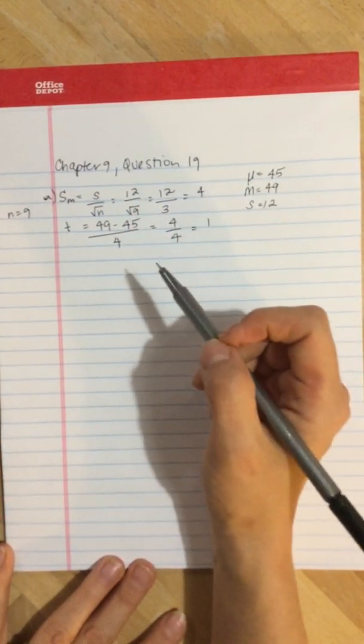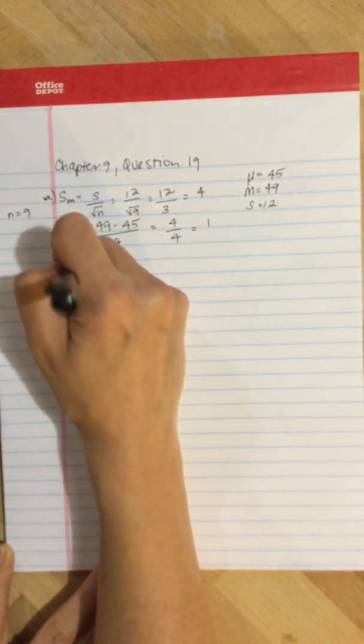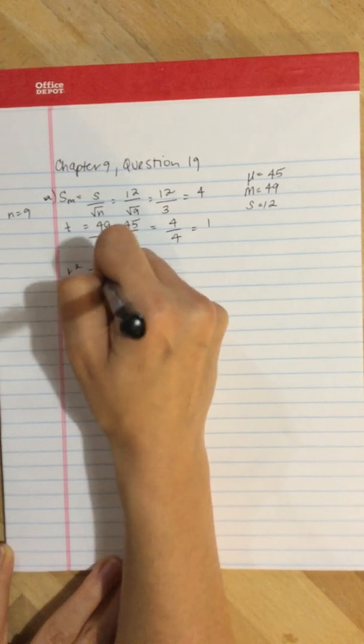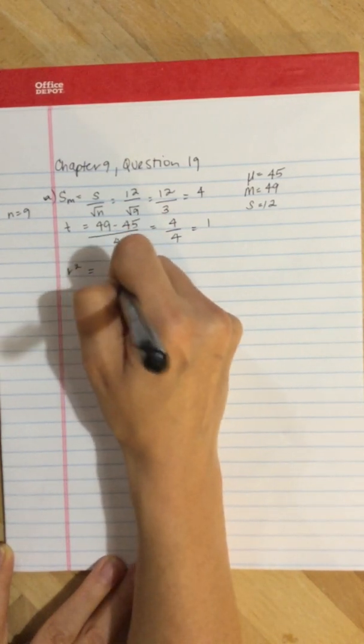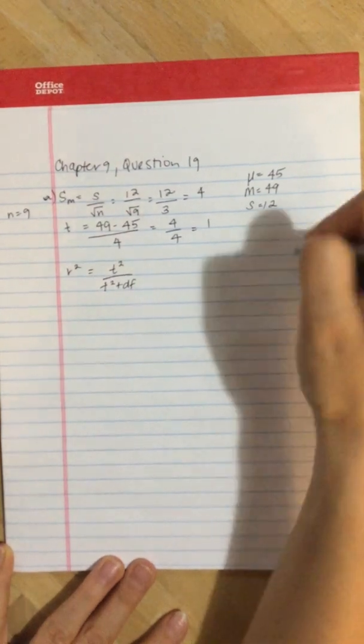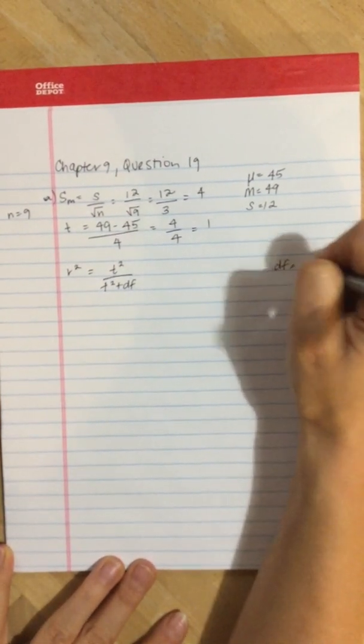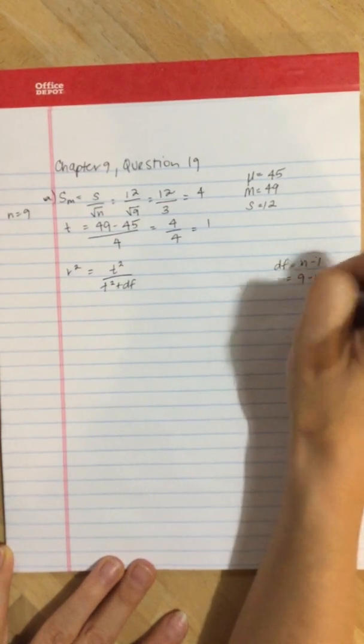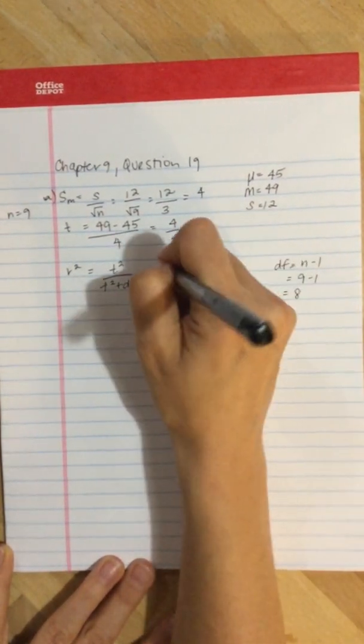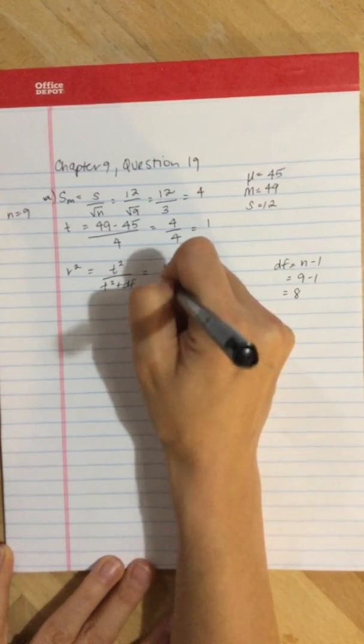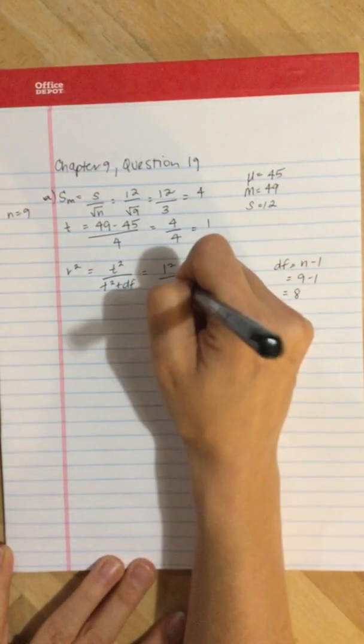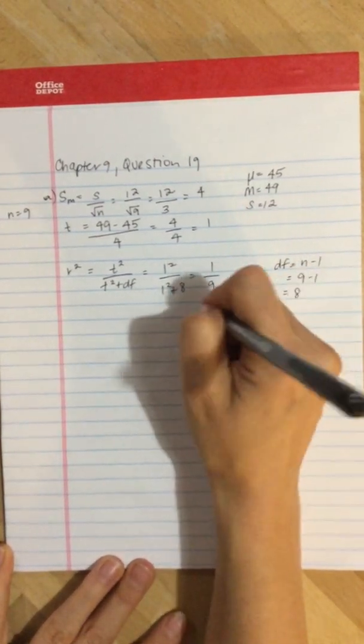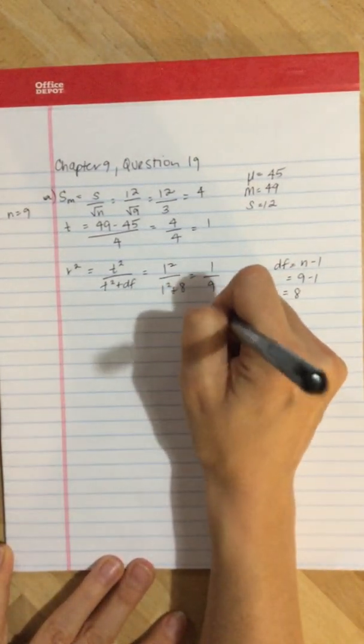Now, we can compute r². The formula is t² divided by t² plus the degrees of freedom. Degrees of freedom equals n minus 1, so 9 minus 1 equals 8. We've got 1² divided by 1² plus 8, which is 1 divided by 9, which equals 0.111.